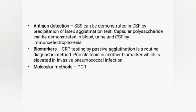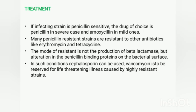Two biomarkers for streptococcal infection are CRP (C-reactive protein) and procalcitonin. CRP testing is a routine diagnostic procedure tested by passive agglutination using latex particles coated with anti-CRP antibody. Molecular methods using PCR-based techniques are also used for identification of Streptococcus pneumoniae.